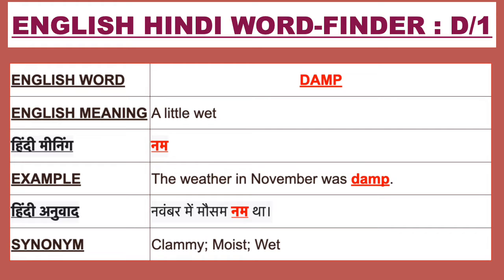Our first English word is 'damp'. The English meaning of damp is 'a little wet'. Damp ka Hindi meaning hai 'nam'. For example: the weather in November was damp. Is Hindi mein bulenge: November mein mausam nam tha.